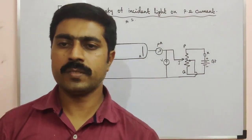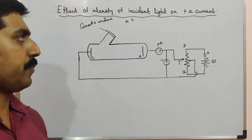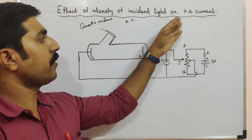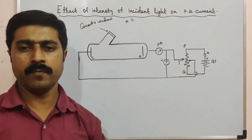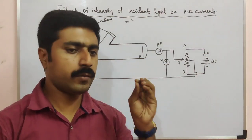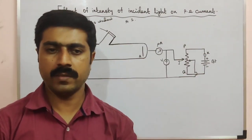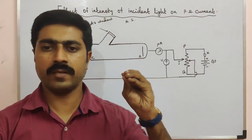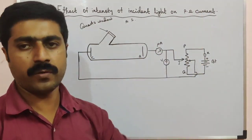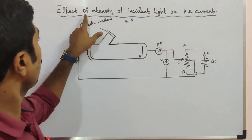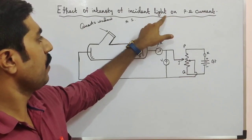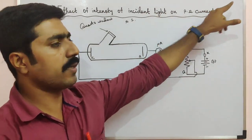Hi students, today we are going to discuss the topic: Effect of Intensity of Incident Light on Photoelectric Current. Due to photoelectrons, the process of photoelectric emission produces this type of current. So that is the photoelectric current — we will see the effect of intensity of incident radiation or incident light on photoelectric current.